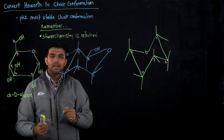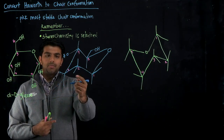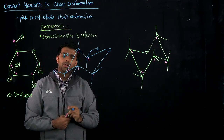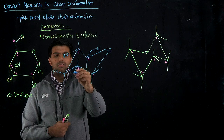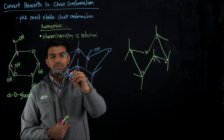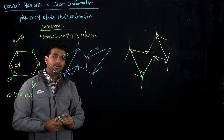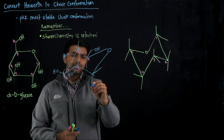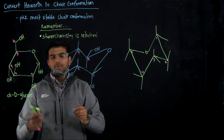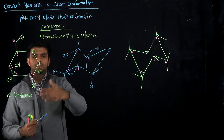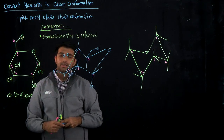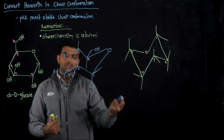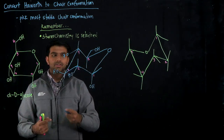Carbon number three has an OH going up, so it's going up on my chair and it's equatorial once again. Carbon number two has an OH going down — down on carbon two is equatorial as well. Carbon number one has a group going down, and in this case going down means it's axial. Just because something is going up on my Haworth doesn't necessarily mean it's axial or equatorial — those are not defined by direction alone. The only thing defined is the stereochemistry: up on the Haworth means up on the chair, and down means down.